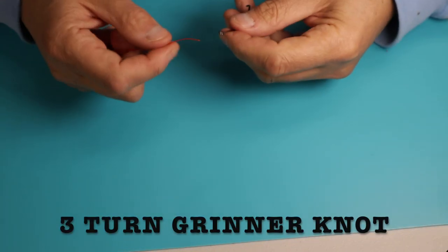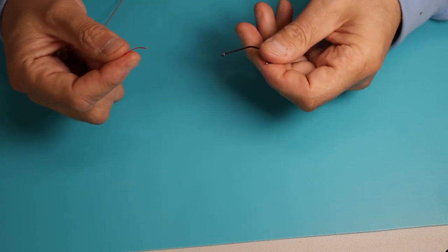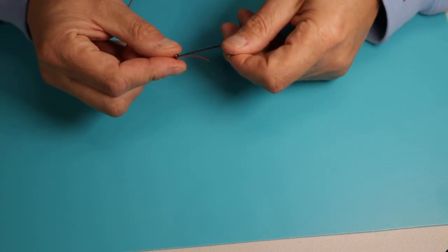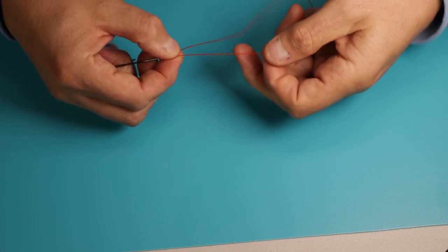The next knot we're going to look at is the three turn grinner. So you start with the tag end through the eye of the hook, and just like the blood knot right at the very beginning,